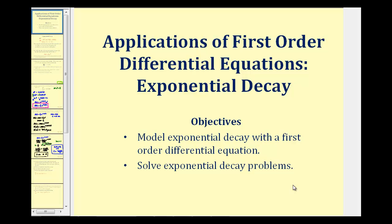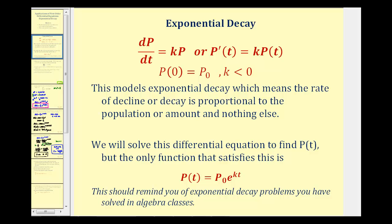Welcome to part two of applications of first order differential equations involving exponential decay. In part one, we discussed how the differential equation dp/dt equals k times p, or p prime of t equals k times p of t, models exponential decay — meaning the rate of decay or decline is proportional to the population or amount, and nothing else.